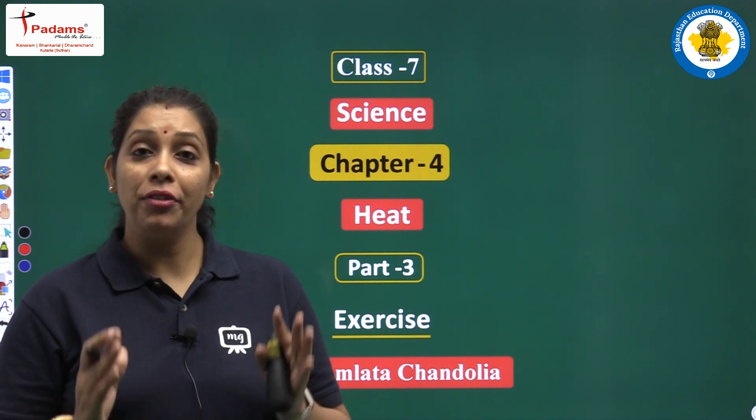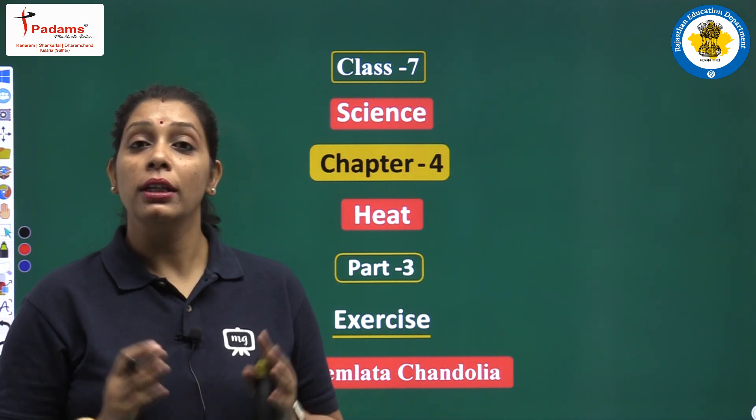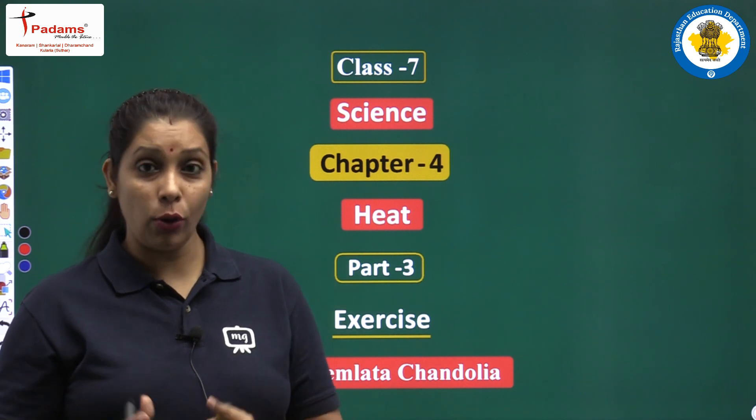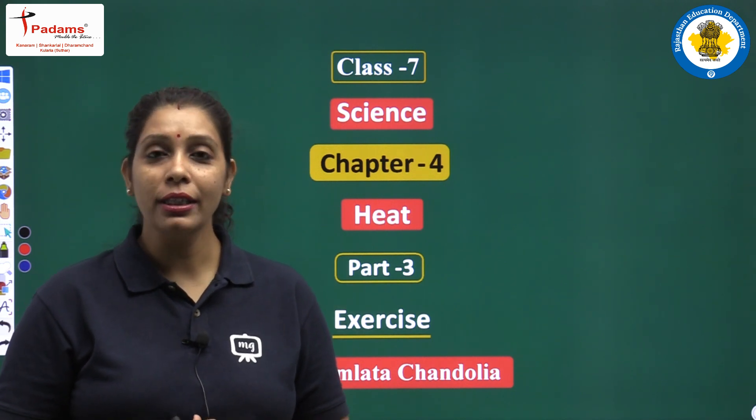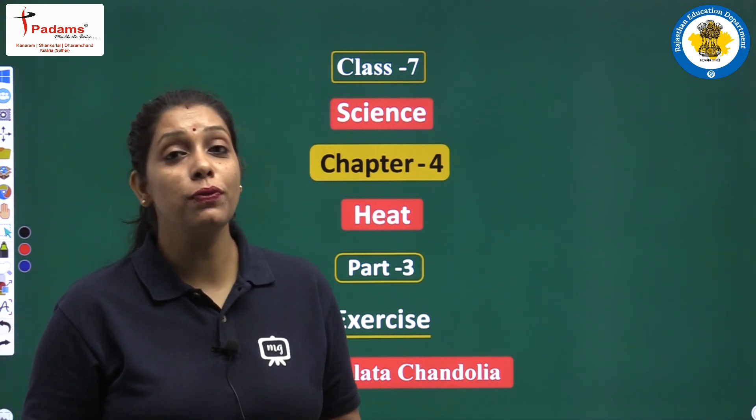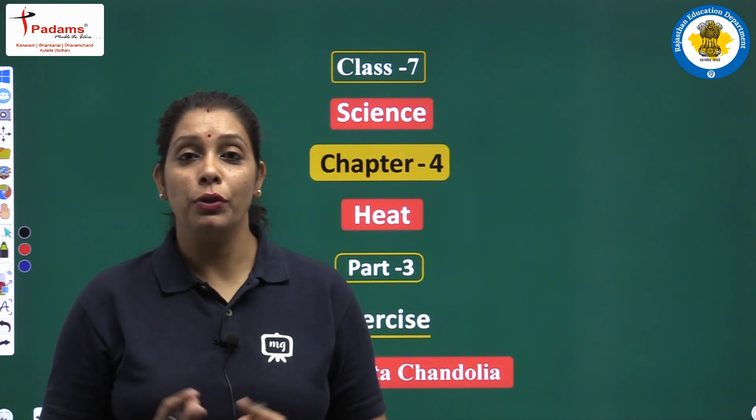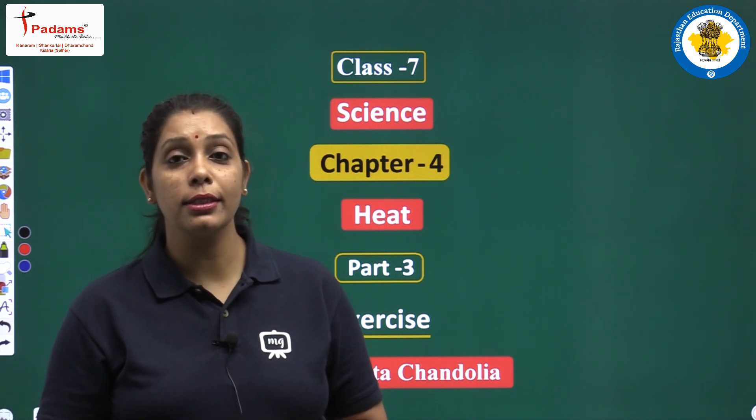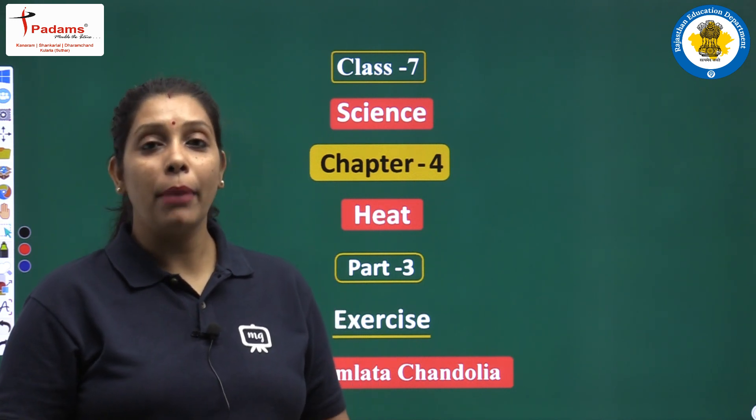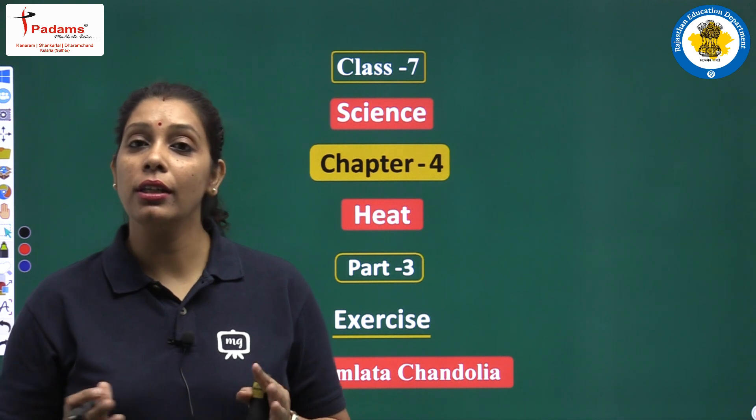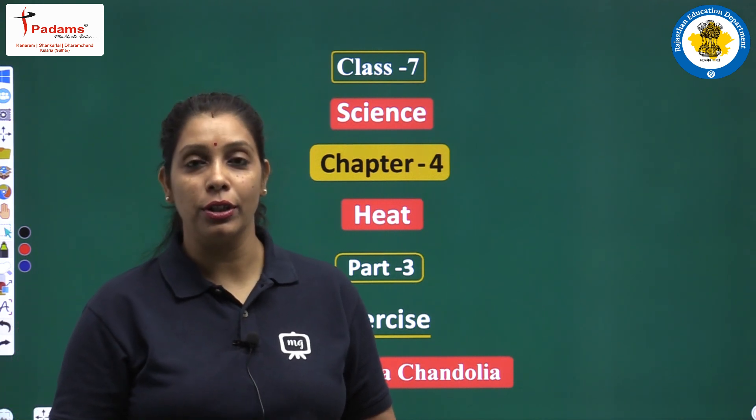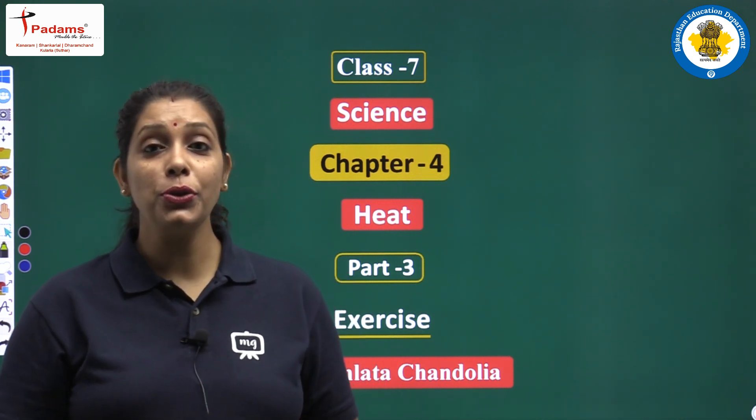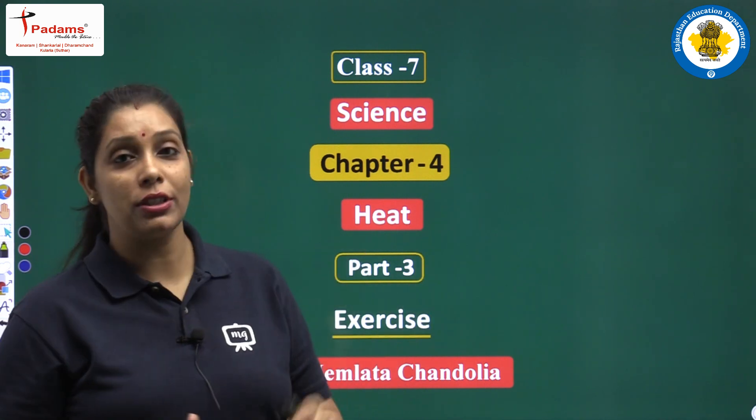In our videos of this chapter, we discussed about what is heat, sources of heat, and the basic differences between heat and temperature. We also discussed about temperature, the devices used for measurement of temperature, clinical and laboratory thermometer, and the transfer of heat by three ways: conduction, convection, and radiation. Today we are going to discuss the exercise section of this chapter.